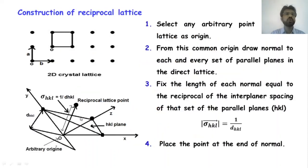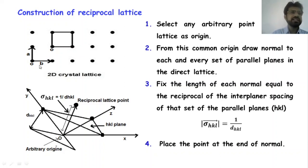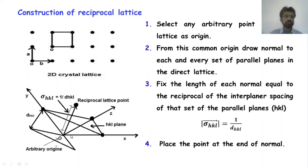Now we are going to see about the construction of the reciprocal lattice. This is the two-dimensional square lattice array. In this case, A and B are the fundamental translation vectors. With these, there is the formation of a square array. We can see how to construct a reciprocal lattice in case of any type of crystalline material, any two-dimensional array or three-dimensional array.